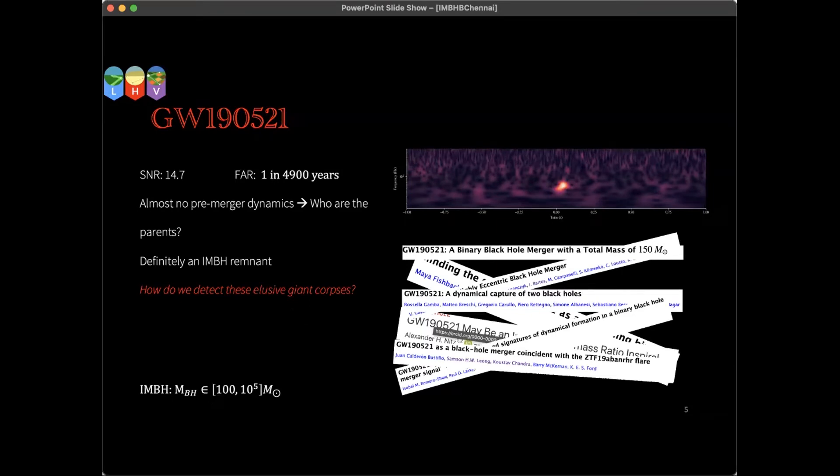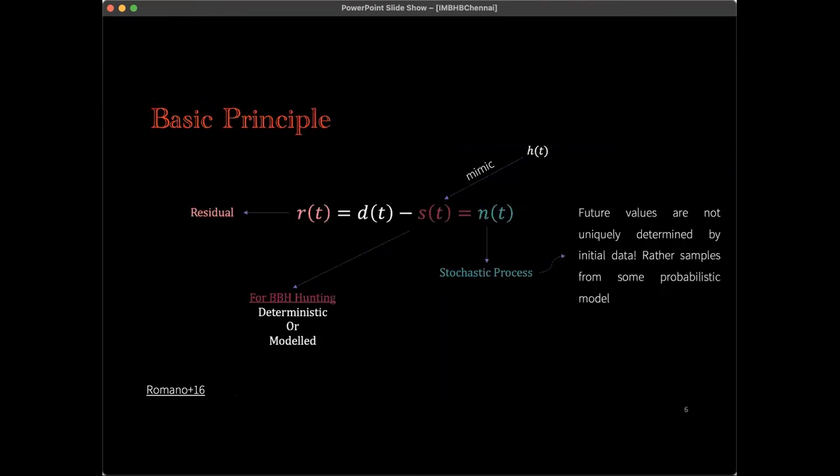Let me start from the very basics. The fundamental principle behind gravitational wave data analysis is to find a model strain h(t) that significantly mimics the signal strain s, such that the residual—which is the data minus the model strain—is consistent with the noise process. Hence it is really important to understand the noise process.